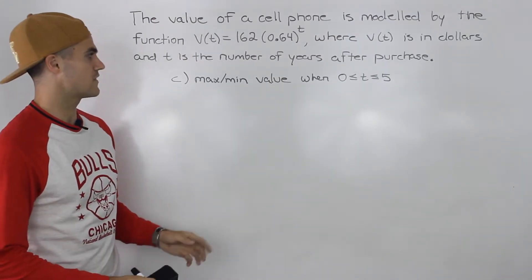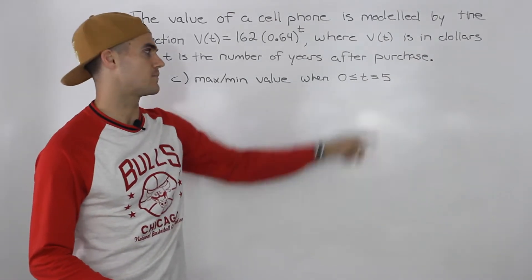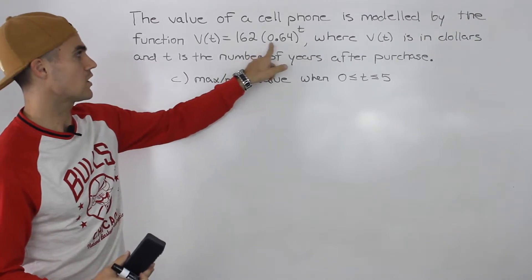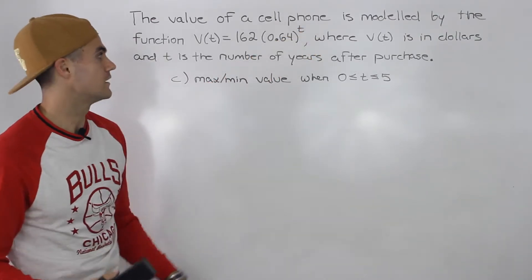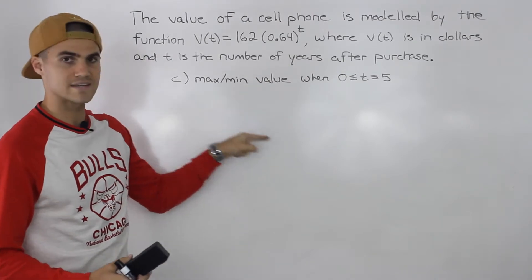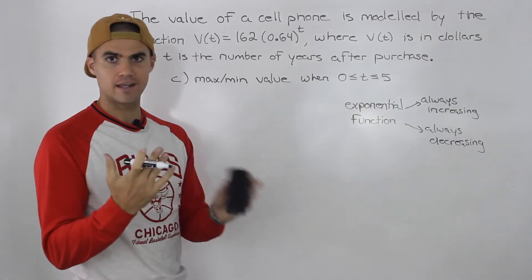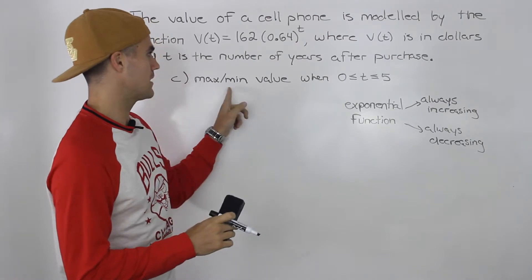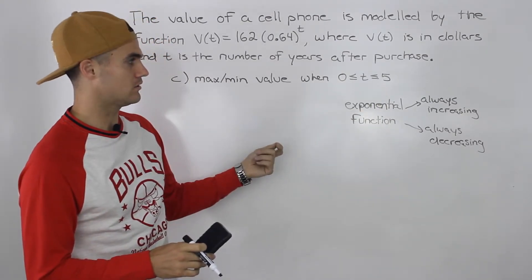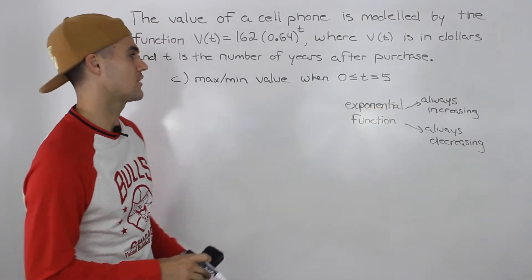Moving on to Part C, we have to find the max and minimum value of the phone when T is between zero and five years. It's a tricky question, but not too bad when you realize you're dealing with an exponential function — 0.64 to the power of the independent variable. Exponential functions are always either increasing or always decreasing. So over any interval, the max and min values are always going to be at the endpoints, because anything in the middle is always between those values. The function never has a turning point.